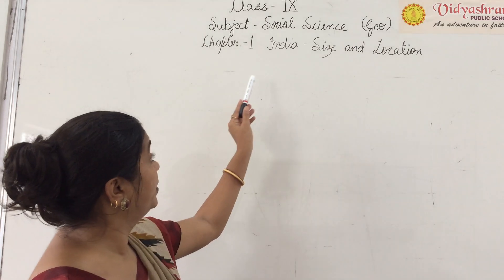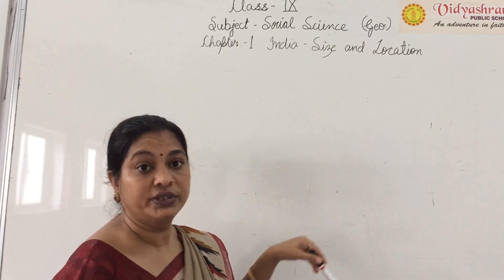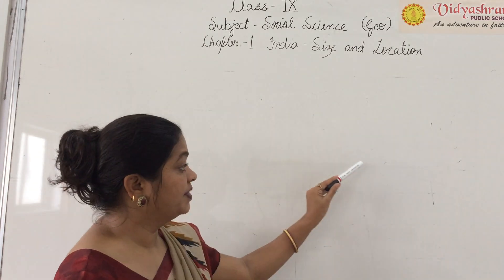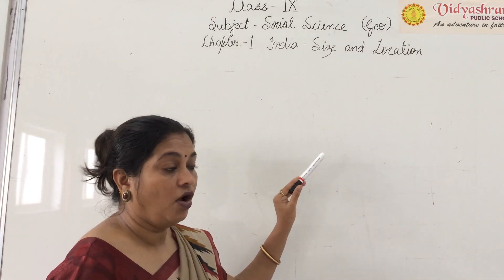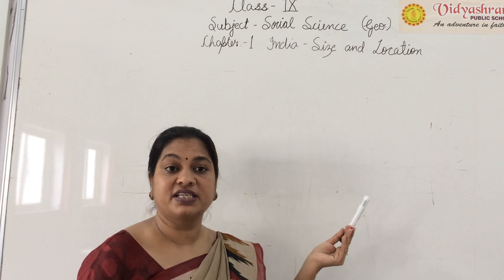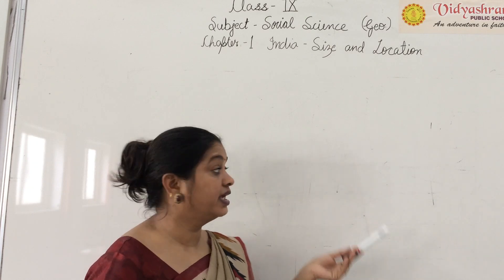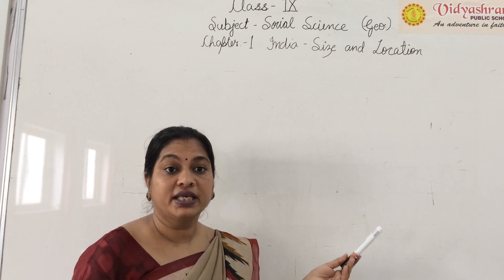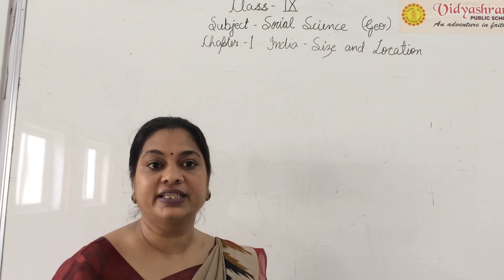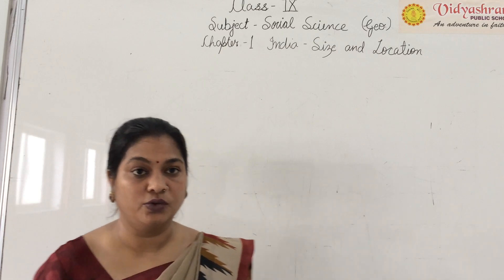This chapter deals with India's position throughout the world. India is in which hemisphere and in which direction it is located, what is India's size and which neighboring countries surround it. Union Territories, water bodies, and their peculiarities. So this chapter deals with all of that.